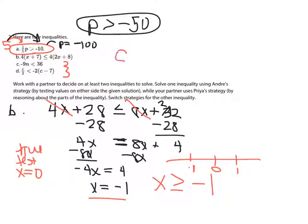I will give you the answers to c and d so you can test them yourself. For c, I have x is greater than negative 4. You can use Andre's or Priya's method. And then d, x is less than 6. Cool, alright.